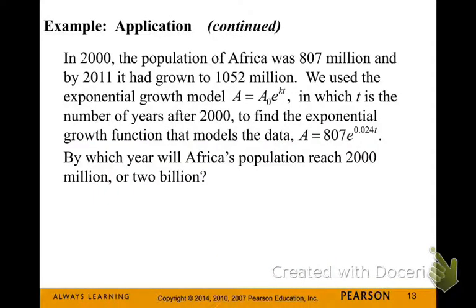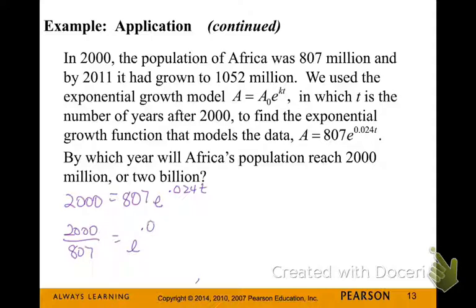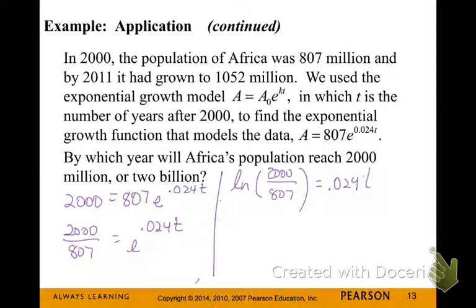Now let's find in which year Africa's population will reach 2,000 million, or 2 billion. We set the ending amount to 2,000, use 807 as the beginning amount, and solve for T. Rewriting in log form: the natural log of 2,000 over 807, divided by 0.024, gives about 38 years after 2000 — so Africa's population will reach 2 billion around the year 2038.